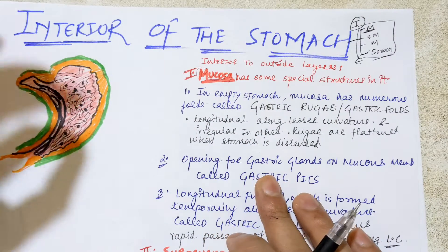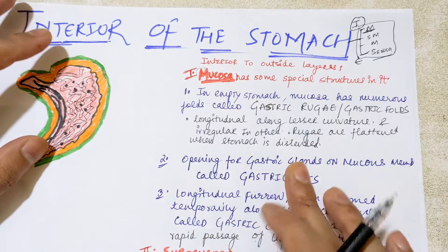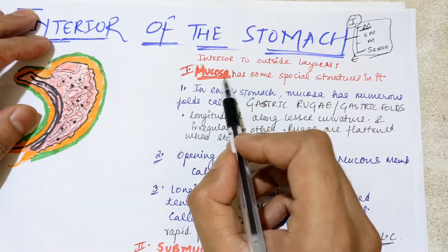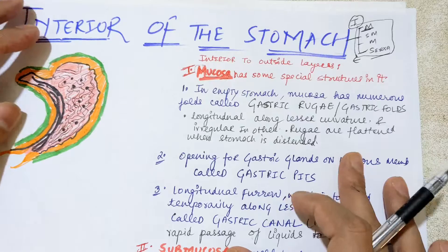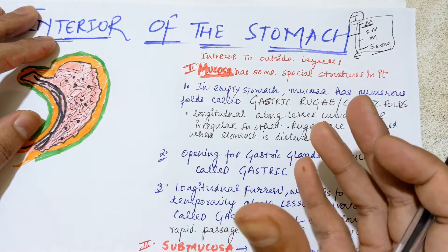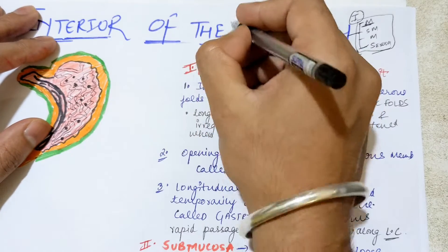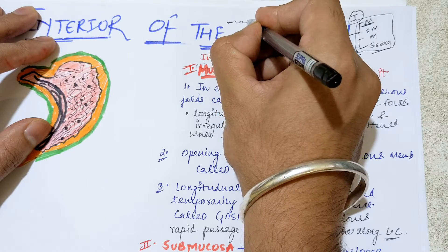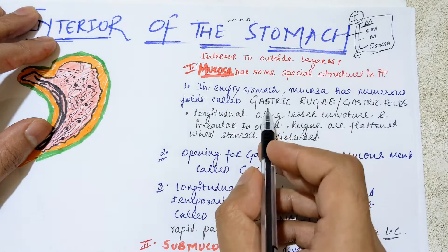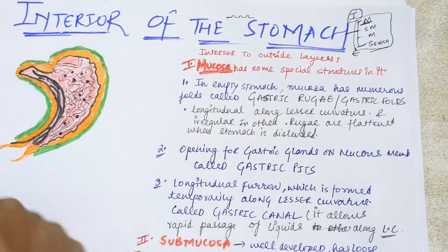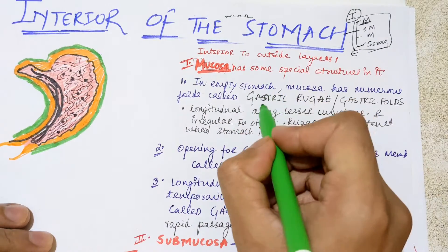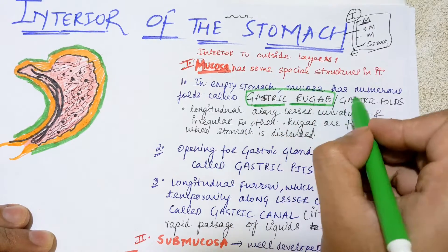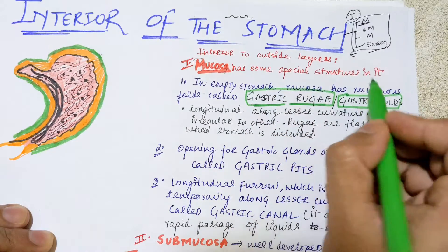We begin from internal to external, so the first layer from inside is the mucosa. In the mucosa we have some special structures for the stomach. When the stomach is empty, there are numerous folds on the mucous membrane. These folds are called gastric rugae or gastric folds.